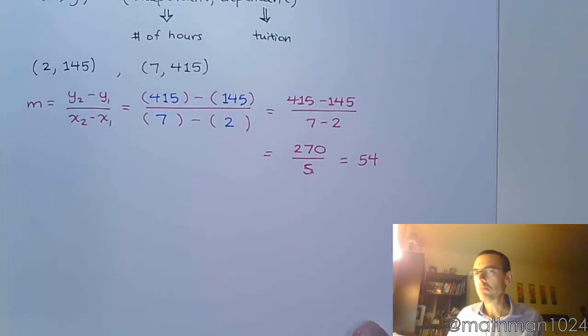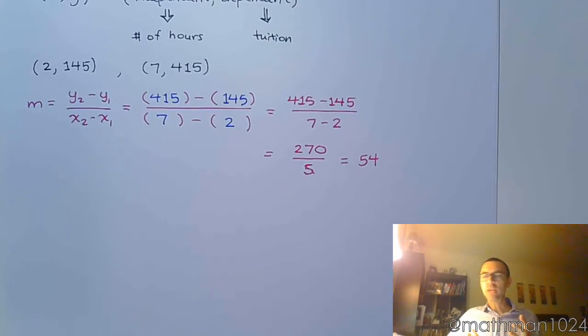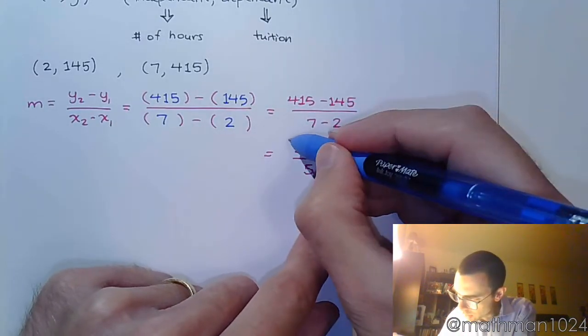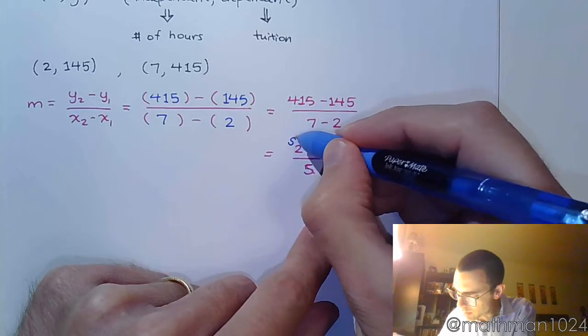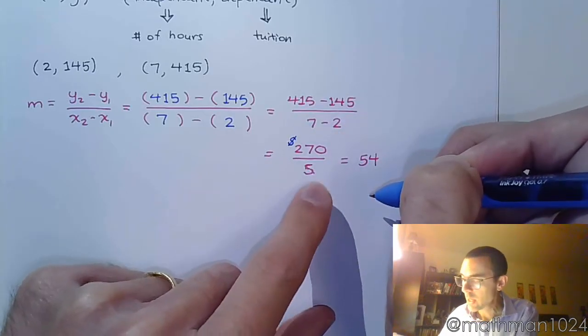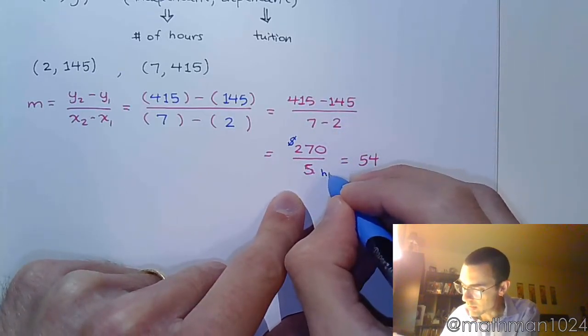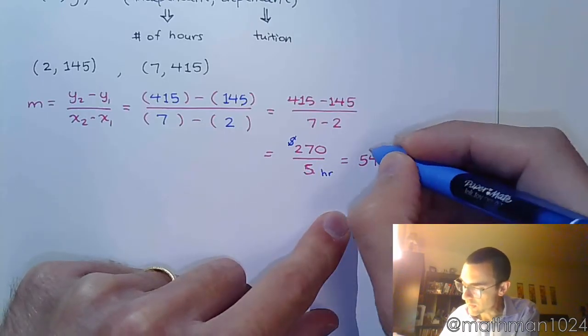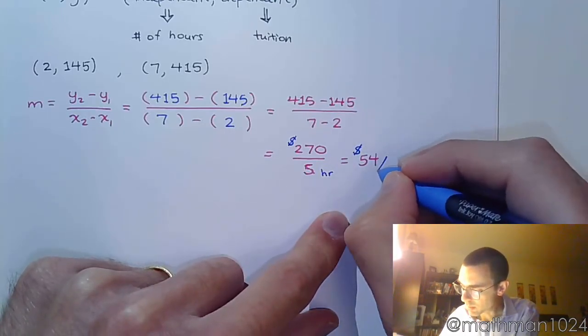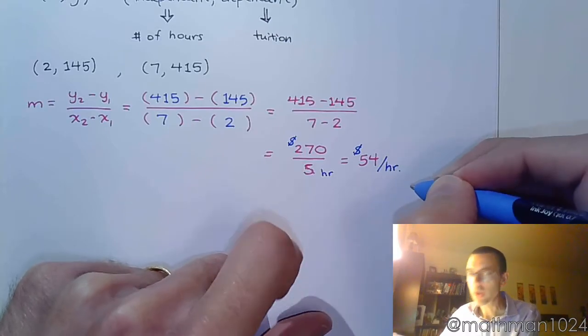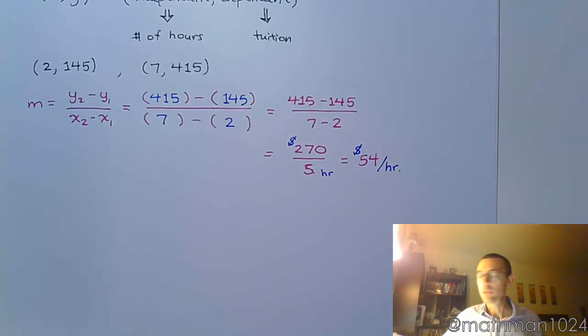Now, what does that 54 mean? And this is where I want you to understand not just how do we do this, but what does it all mean? Well, if you think about the problem, in this numerator, this 270 was a measurement of money. In the denominator, this was a measurement of hours. So, this 54 that we found out is the cost per credit hour at this community college. Okay, so now you've got a slope, and you understand what that means. Let's find the equation of the line, going back to y equals mx plus b.